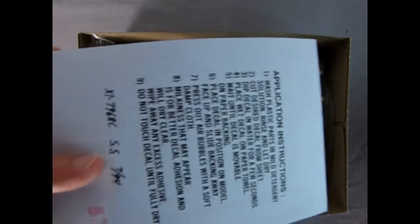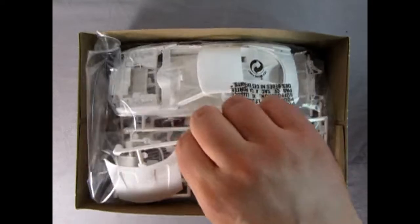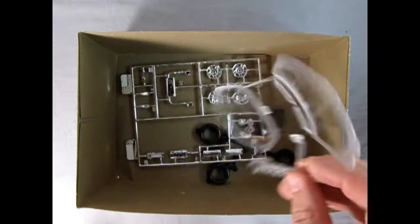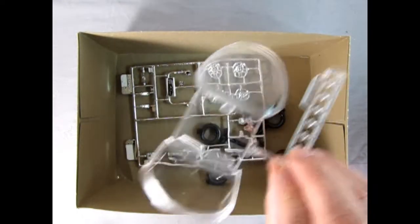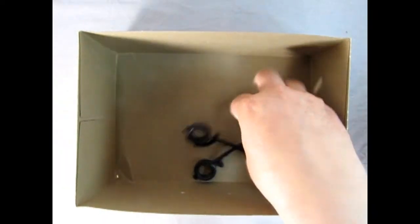Inside we've got our decal sheet and then I've never even opened this. There's all our white plastic components right in the bag here, as well as our windshield. Now that was not put in the bag so hopefully nothing scratched on it. There's our wonderful chrome and then we've got our tires.